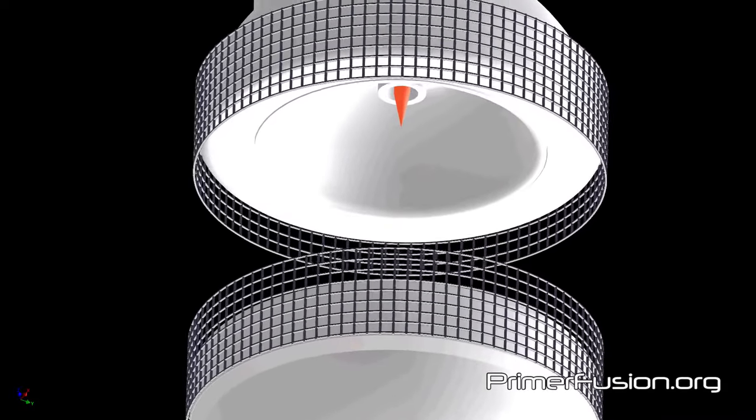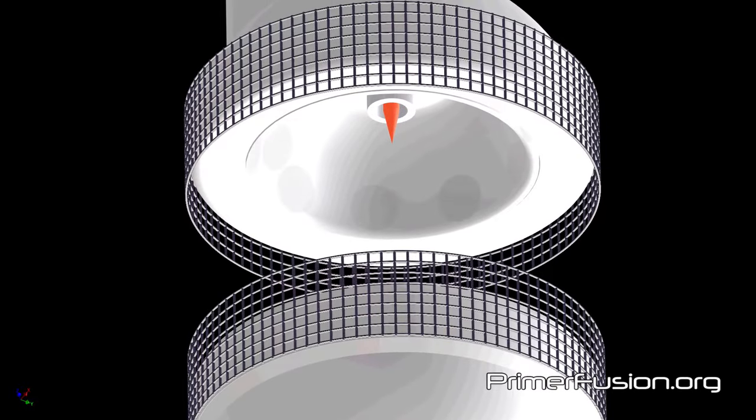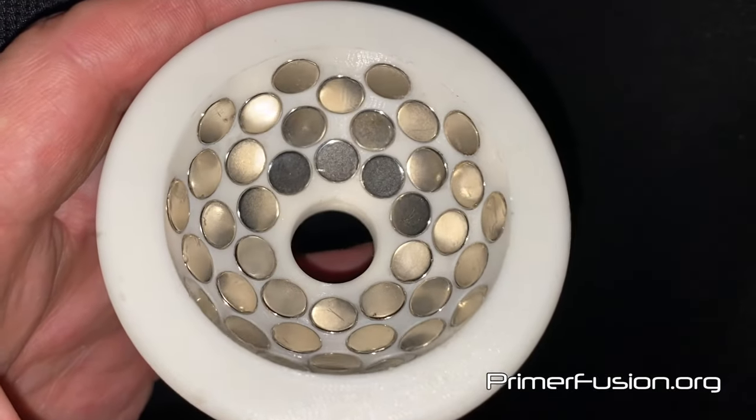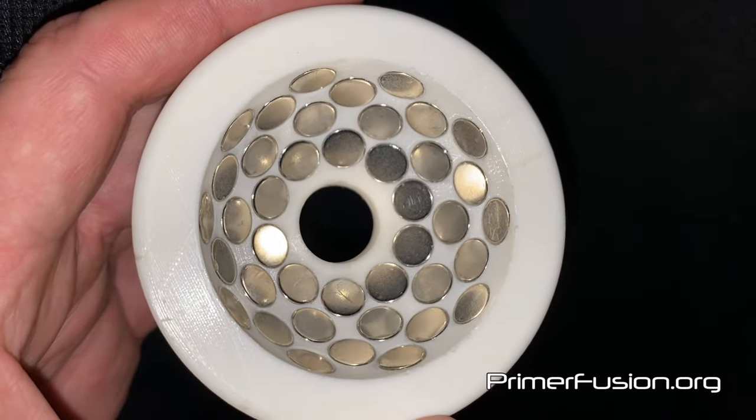As you can see the top half of the reactor contains another bowl-shaped magnetic array. These unique magnetic arrays are critical to the Primerfusion process.